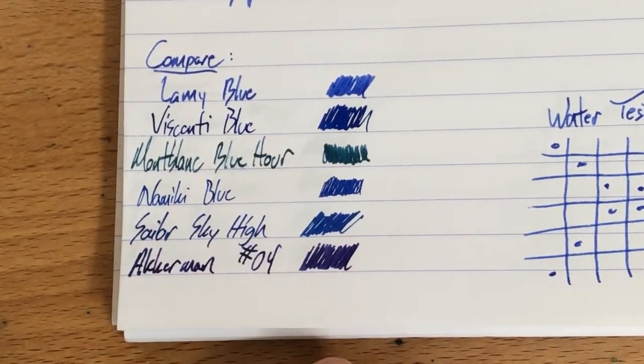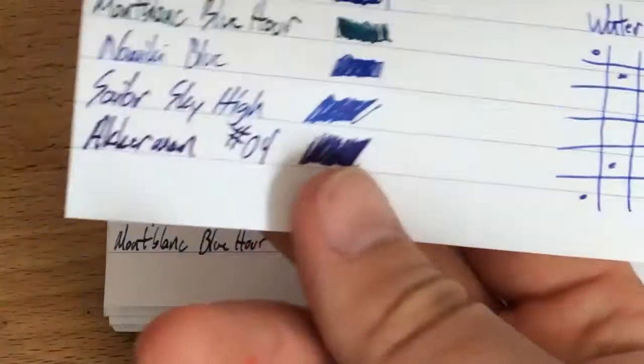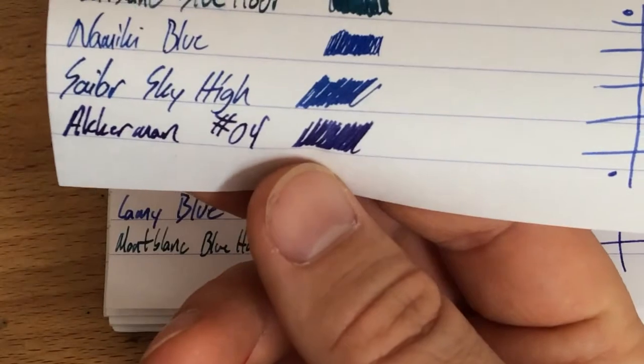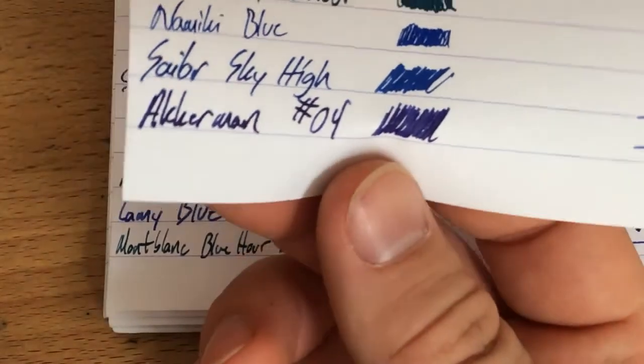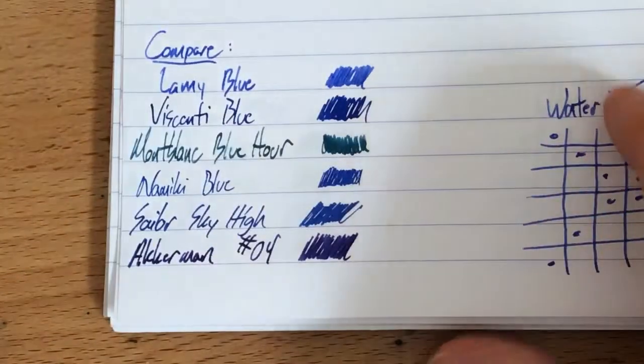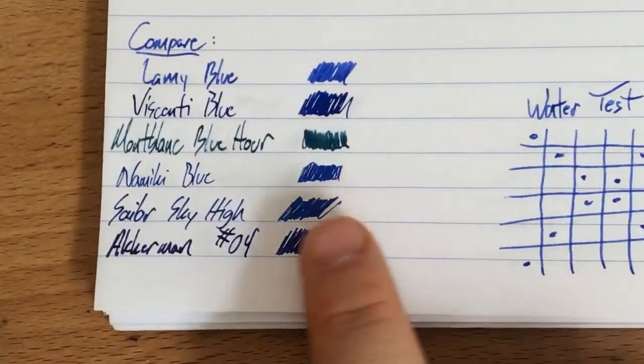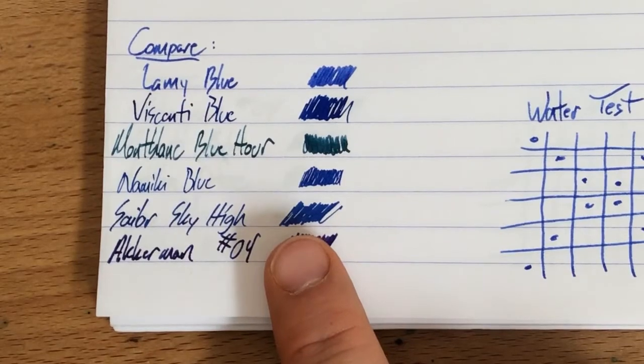And then Ackerman number four, which is probably coming up next on the blog, which is kind of a deep blue-blackish, but it's definitely got a bit of a purple tinge, I think. Anyway, that's pretty cool. So there it is compared to those - you can see it's lighter than those mostly, and it's probably closest to Sky High, I guess. It's a little bit lighter than Sky High, but not much. It's fine, it's a fine ink, no problems.